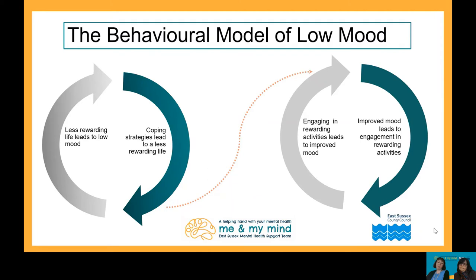It is hard to break the cycle without help. You can help your child to improve their mood by gradually adding rewarding activities to their day-to-day life and encouraging them to find ways to bring some enjoyment, pleasure, and sense of satisfaction back. The activities don't have to be grand — they can be as simple as speaking to a friend or completing a task they have been avoiding, like tidying their bedroom or doing a piece of homework.